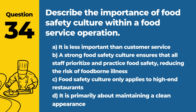Question 47. Discuss the strategies for ensuring food safety in mobile food units. Answer: B. Adhering to the same food safety regulations as stationary restaurants, including temperature control and proper sanitation. Mobile food units must follow strict food safety practices to ensure the health and safety of their customers.